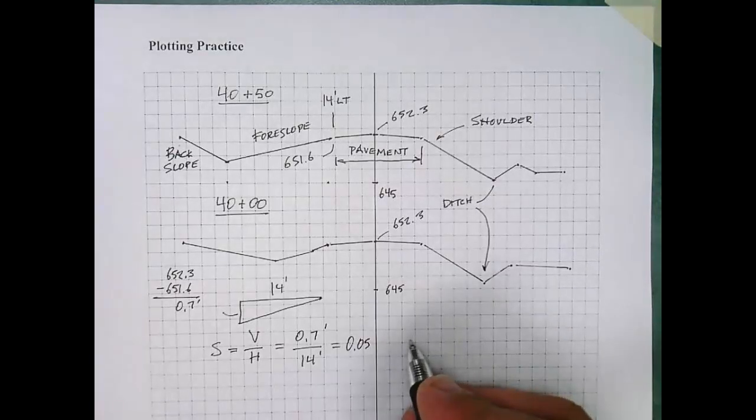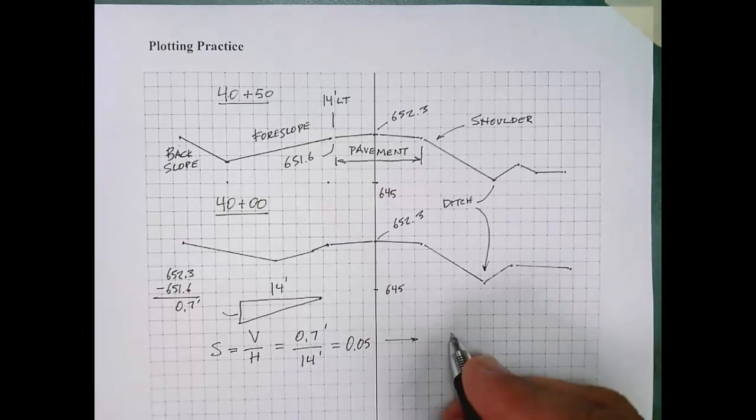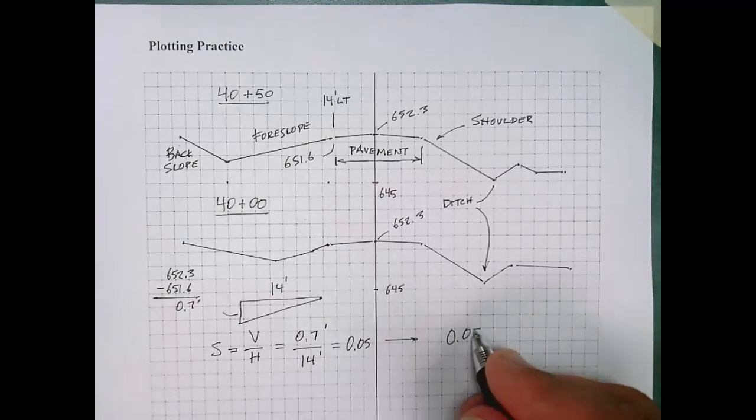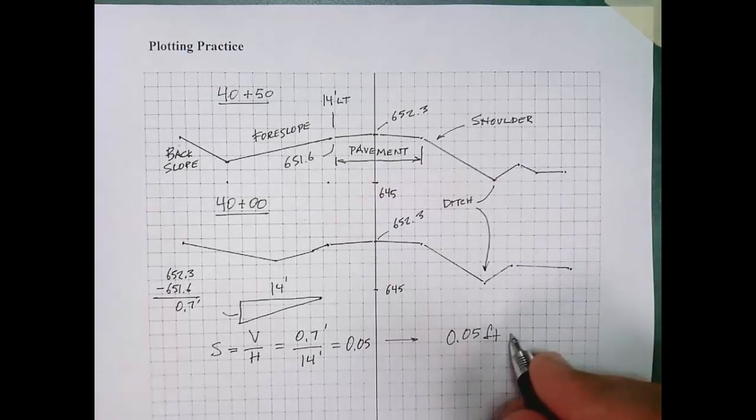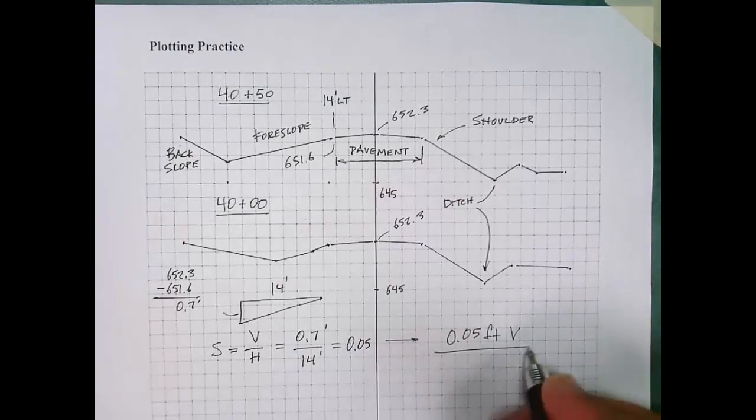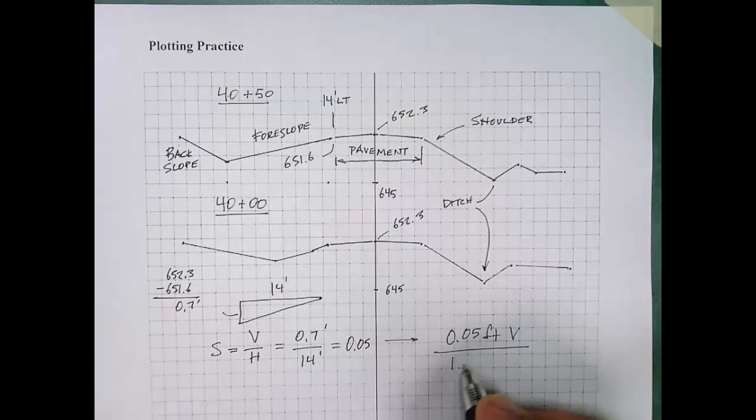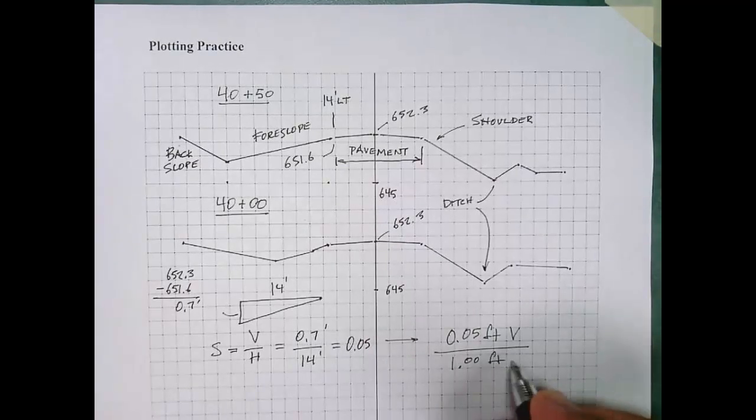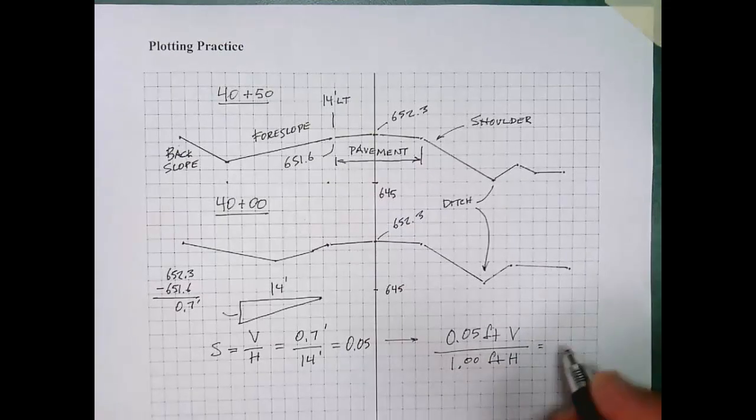Now, that's a decimal expression of slope. A way to think of this is for every 0.05 feet of vertical change, there is one foot of horizontal change, or for one foot of horizontal change, we have 0.05 feet of vertical change.